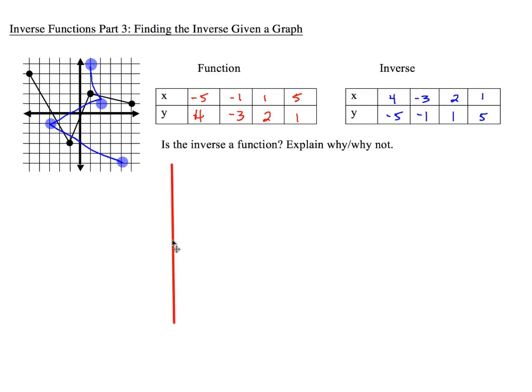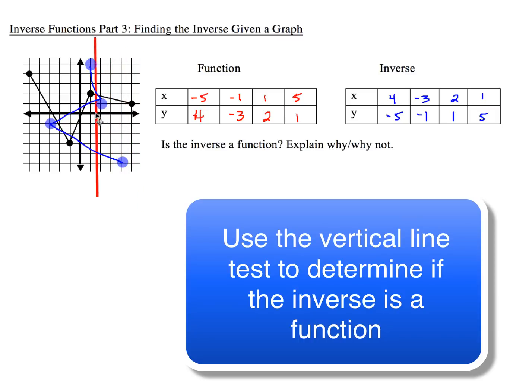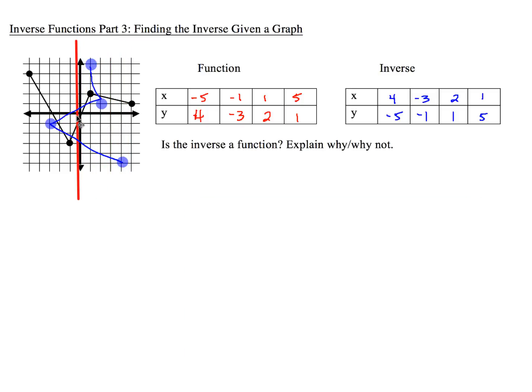Now in order to be a function, this must pass the vertical line test. Is there anywhere along here, if I move my vertical line from left to right, is there anywhere where my vertical line is touched twice? Ooh, there's a whole bunch of spots. So one of them is going to be right here in this spot, and another one is right here in this spot. So that's two times. So the inverse is not a function to explain why or why not, which means we're going to have to write a sentence.